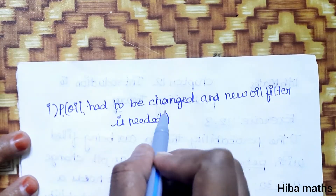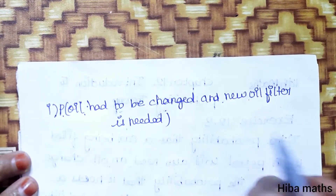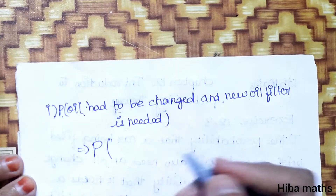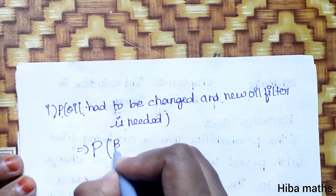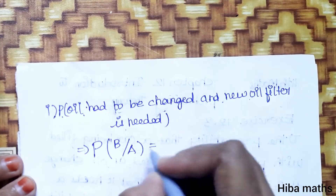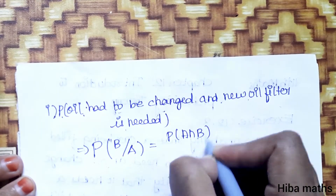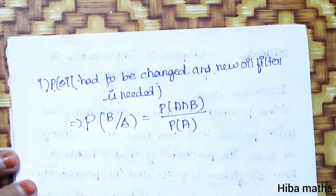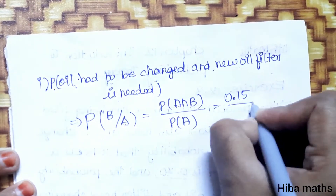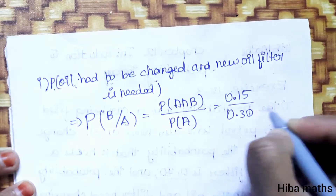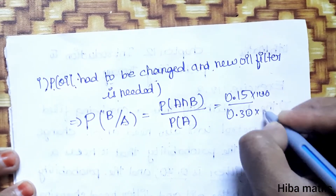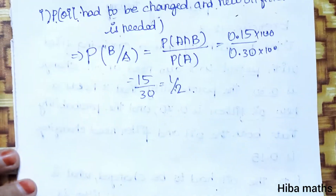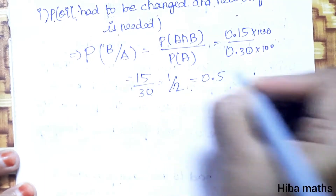Probability that oil has to be changed given new oil filter is needed: P of B given A equals P of A intersection B divided by P of A. That is 0.15 divided by 0.30, which is 15 by 30, equal to 1 by 2, which is 0.5.